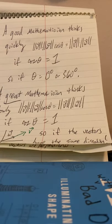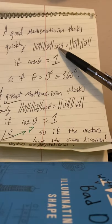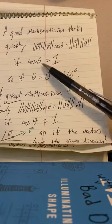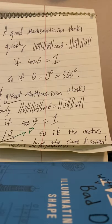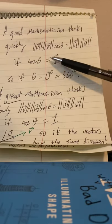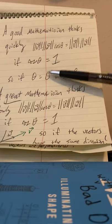Now, a good mathematician thinks quickly, too. He sees, well, if I have a one here, I get an answer. So if cosine of theta equals one, how about that? Boom! And cosine of theta equals one if theta is zero or 360.